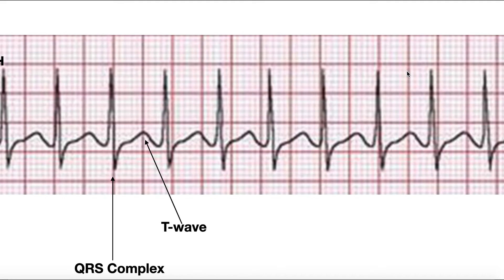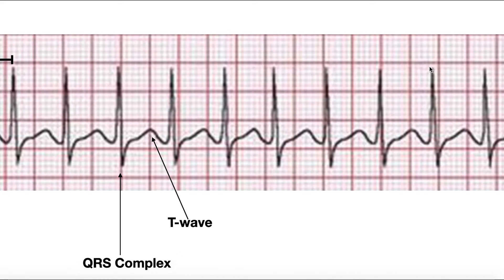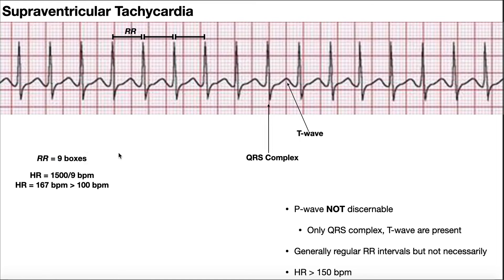So here's five small boxes. Remember, these thicker lines are five, and then six, seven, eight, nine, roughly. There's about nine small boxes between those two, and so to calculate the heart rate, same formula every time, 1500 divided by nine. So 1500 divided by the number of small boxes between the R's, and you divide this out, and you get 167 beats a minute. That is greater than 100, but it's also greater than 150, and so because of that, I should probably put it's greater than 150 here, it's a supraventricular tachycardia.